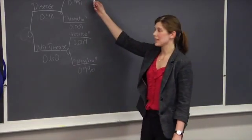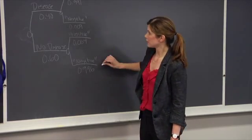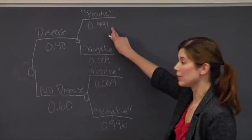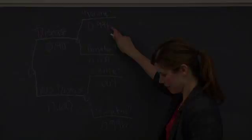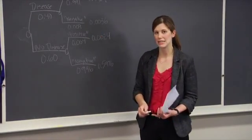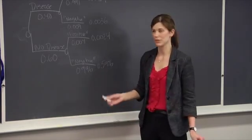Just like last time, I can now calculate the joint probabilities for each of the four outcomes. Again, I'm just multiplying this probability by this probability. But if I want to address the question, what is the probability that a patient has a disease given that they have a positive test result, I need to flip the order of the tree again.